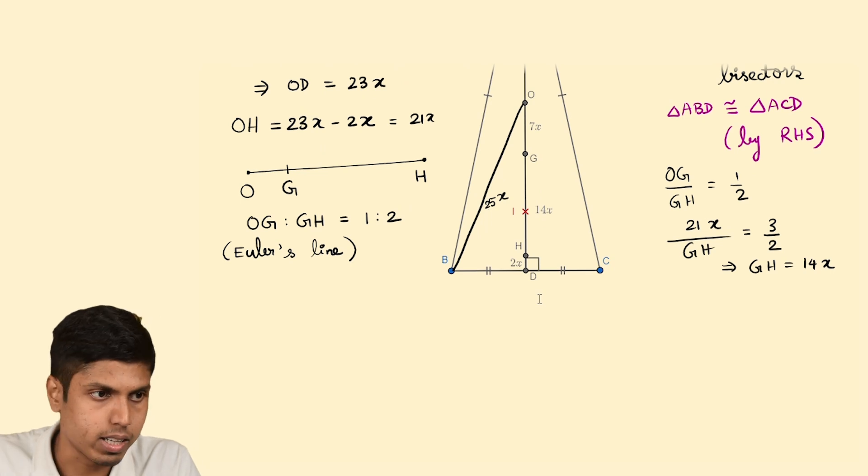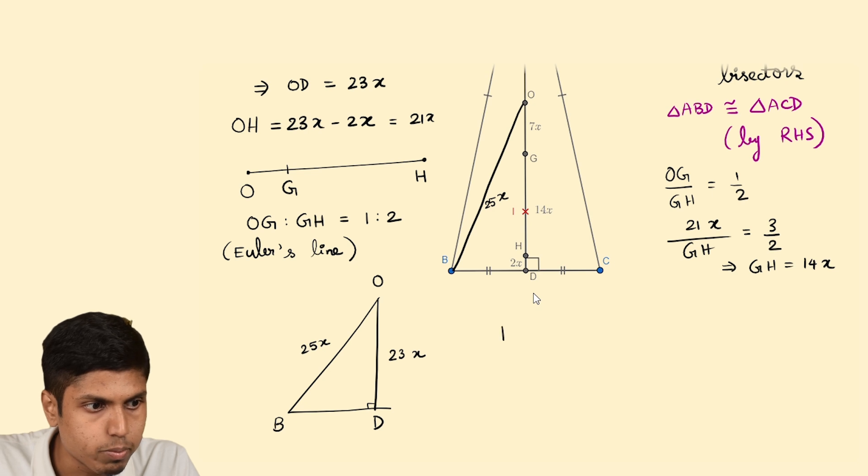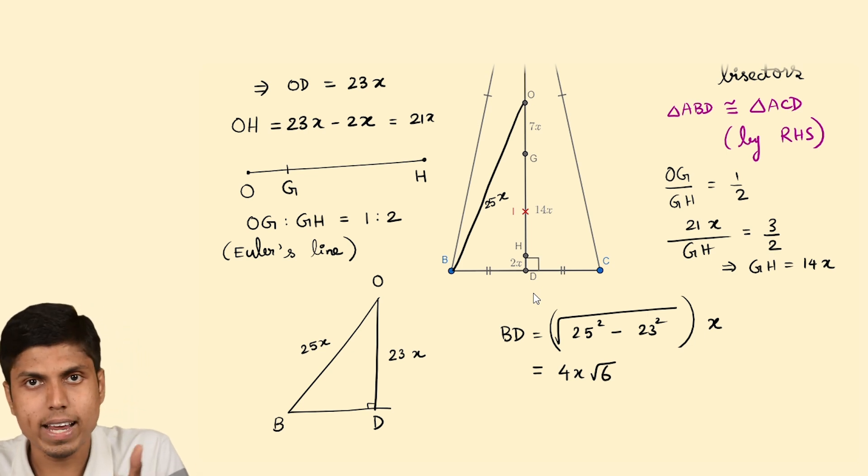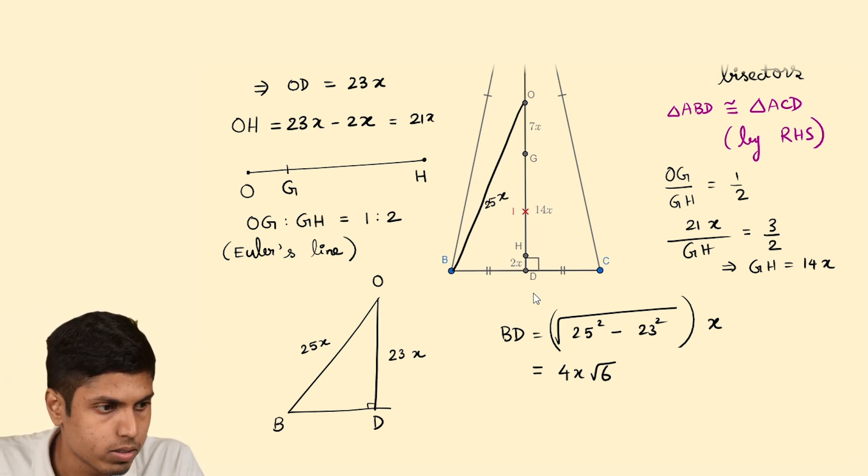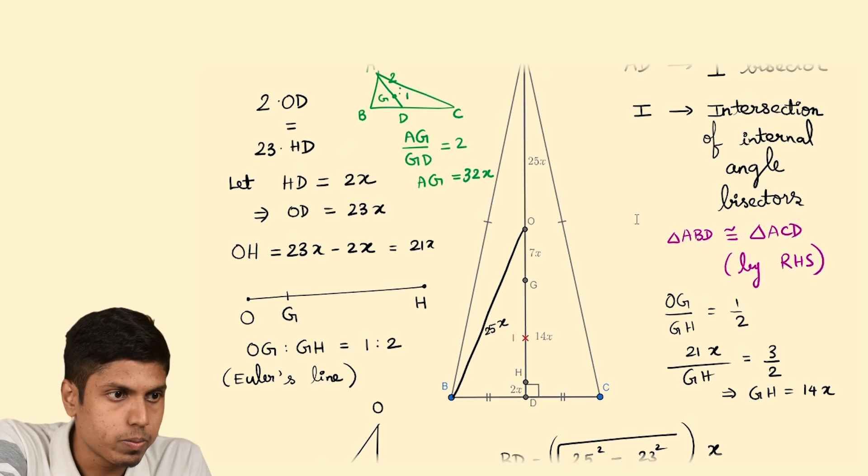If you consider this triangle, namely BOD, which is right angled at D, then this length will be 23X and OB will be 25X. Thus, BD equals under root of 25 squared minus 23 squared times of X, which is equal to 4X times root 6. So it's root 96 and when you simplify, you get 4 root 6. So, let me just write it here. We got BD as 4X times root 6. Great. Now, notice this.